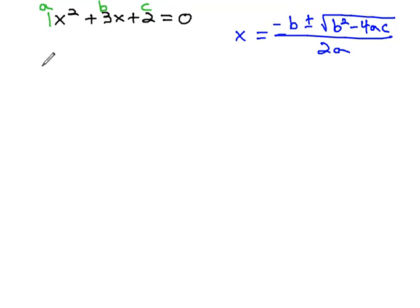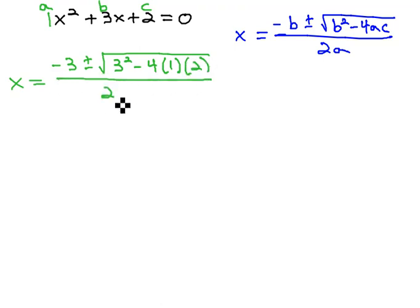So plugging these values into our equation, we have x equals the opposite of b, negative 3, plus or minus the square root of b, 3 squared, minus 4a, 1, c, 2, all over 2a, which is 1.